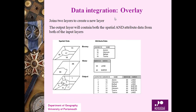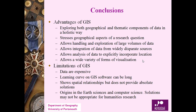Data integration is overlaying — stacking and merging — joining two layers to create a new layer. The output layer contains both the spatial and attribute data from both input layers. For example, combining a Voronoi layer and a water layer produces a new output layer with combined attribute data.